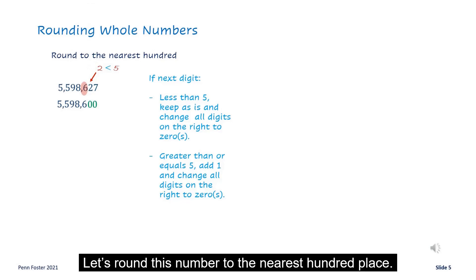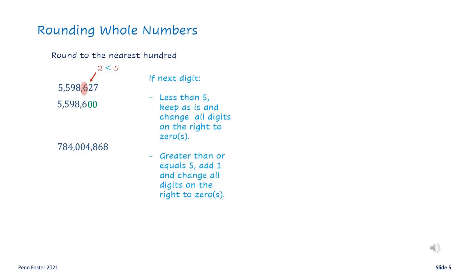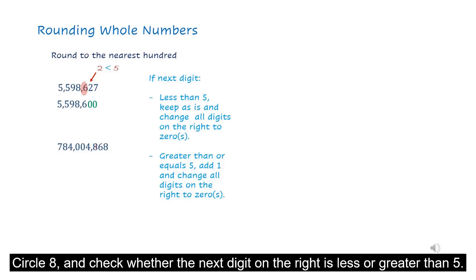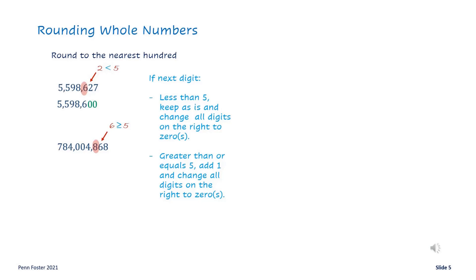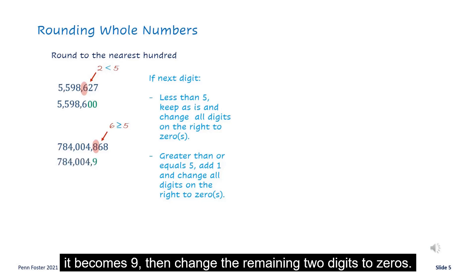Let's round this number to the nearest hundredth place. Circle 8 and check whether the next digit on the right is less than or greater than 5. Since 6 is greater than or equal to 5, add one to 8 — it becomes 9. Then change the remaining two digits to zeros.